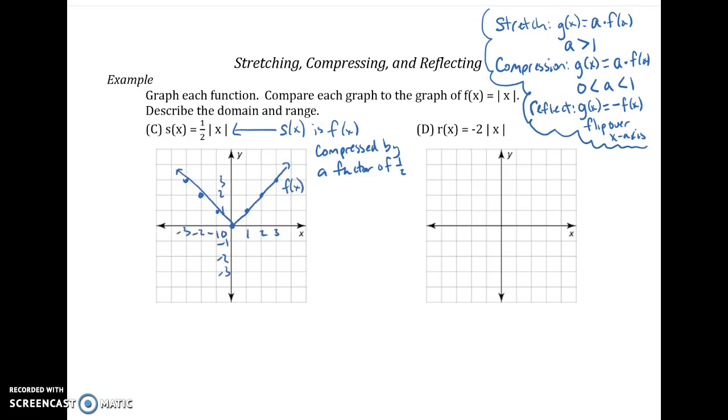So I went ahead and graph my parent function. And because I'm multiplying each y value, because I'm multiplying the whole function, the output by 1 half, I may want to pick and choose which ones I'm going to graph. So I might look at 0, and 0 times 1 half is still 0, because I'm looking at the y value. And then 2 times 1 half is super easy. That's 1.